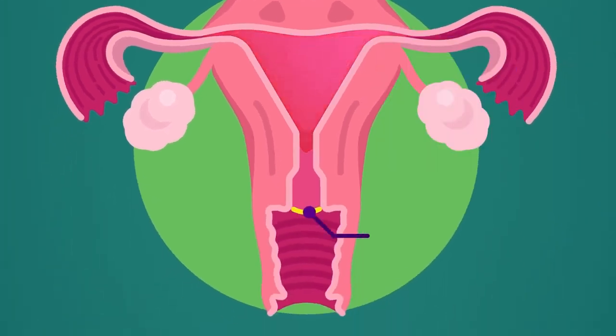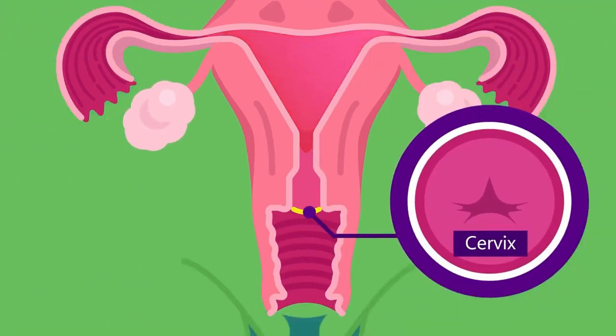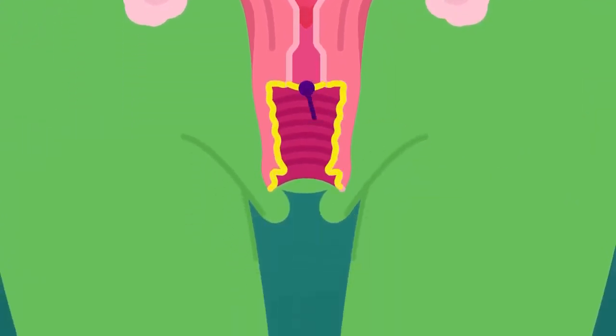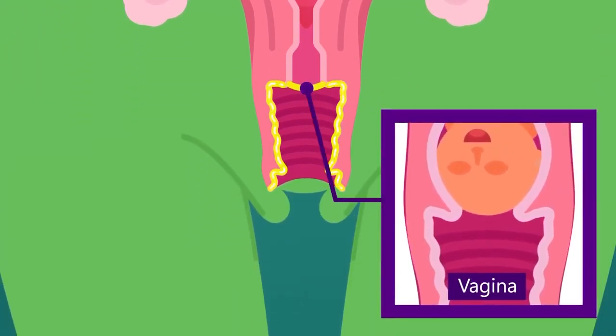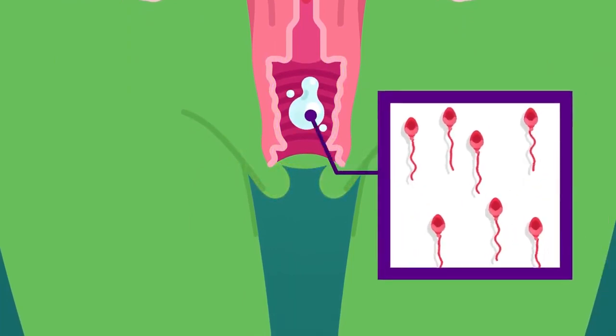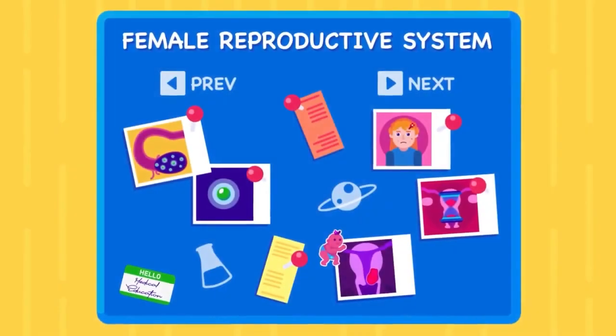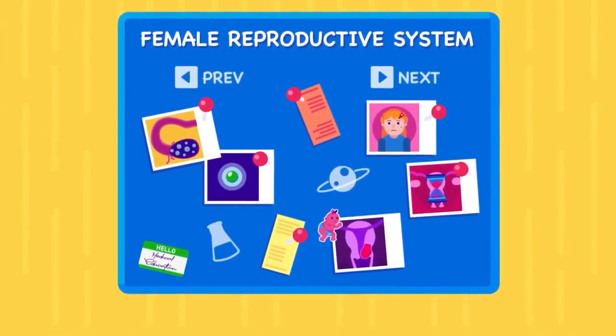At the lower narrow end, or neck, of the uterus is a circular ring of muscle known as the cervix. The outer portion of the uterus is a thin-walled birth canal, or vagina. The opening of the vagina is the vulva. Semen is deposited in the vagina during intercourse.